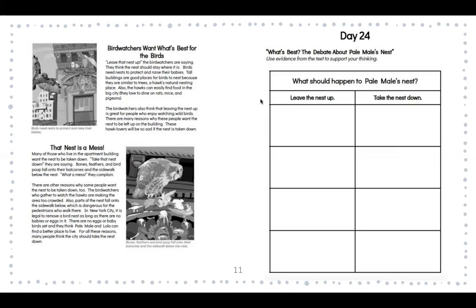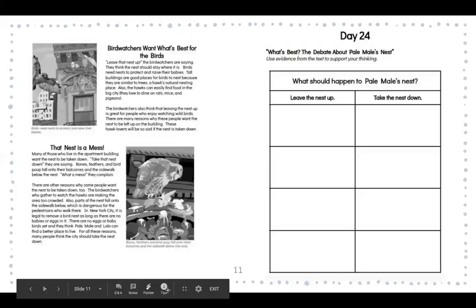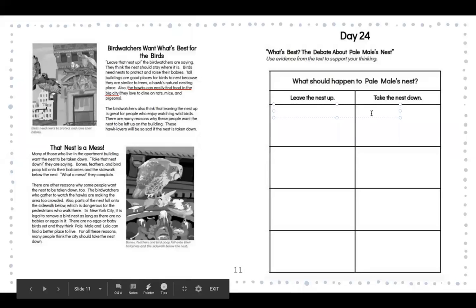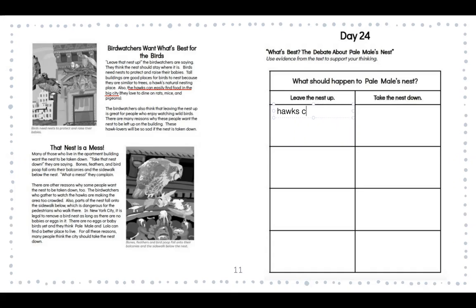I'm going to pause there and start on our first example. You're going to list reasons to either leave the nest up or take the nest down. I've already read the part of our article about leaving the bird's nest up. You can easily find opinions by statements that start with "I think" or "they believe." One of the ones that I found is: the hawks can easily find food in the big city. I am going to underline that so I remember where I found my information. That is one of the reasons for leaving the nest up, so I'm now going to type it in my box below.